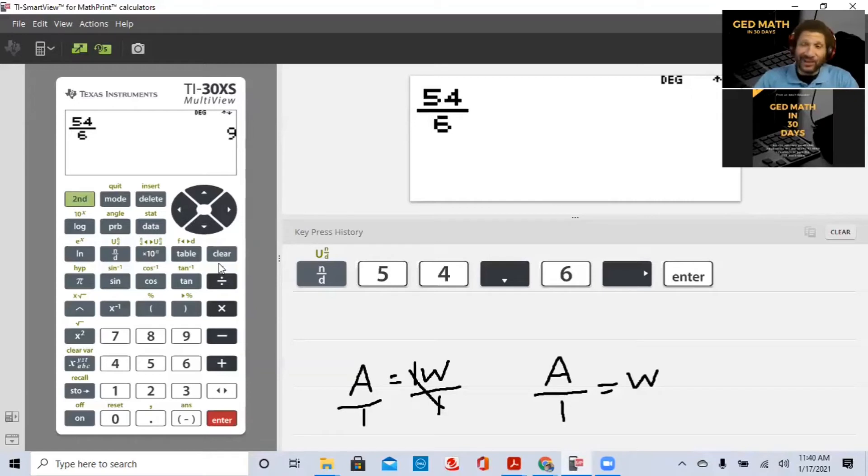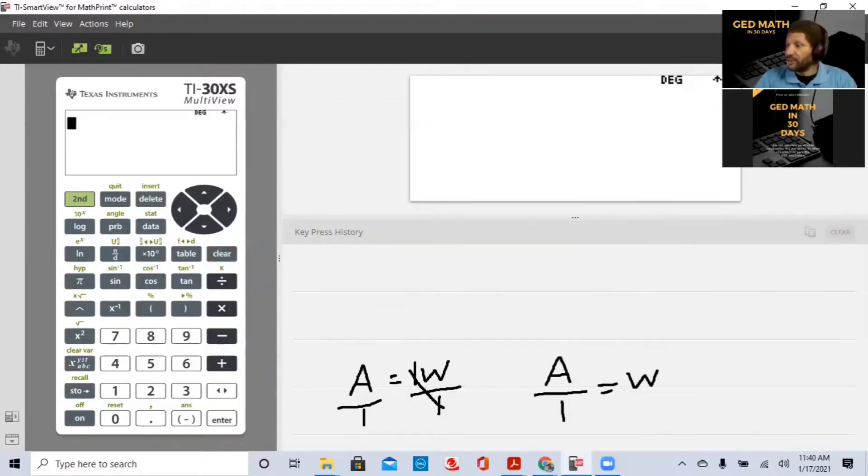We're going to hit 54 divided by 6, hit enter, we're all done. That's how easy it is. Area divided by the other given, either the length or the width. Very easy. Now that becomes a 15 to 20 second problem. Instead of spending time, you use your calculator in a couple seconds. You don't want to make any mistakes.